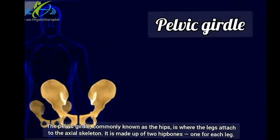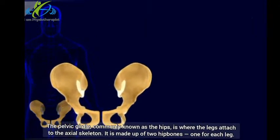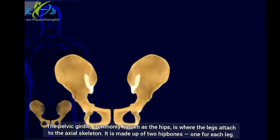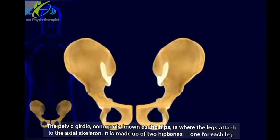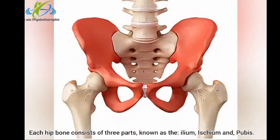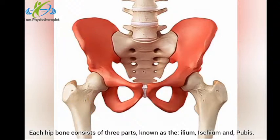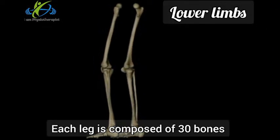Pelvic girdle: The pelvic girdle, commonly known as the hips, is where the legs attach to the axial skeleton. It is made up of two hip bones, one for each leg. Each hip bone consists of three parts known as the ilium, ischium, and pubis. Lower limbs: Each leg is composed of 30 bones.